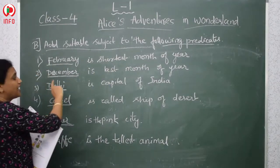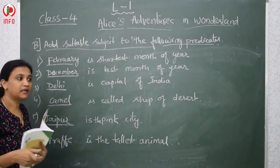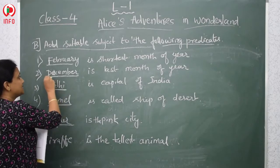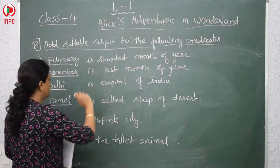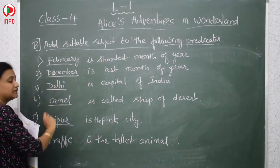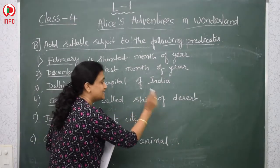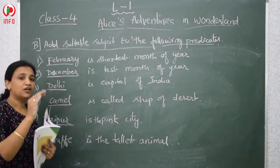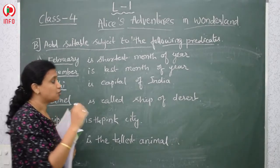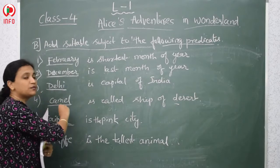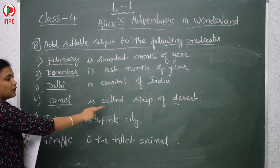The second one is: dash is the last month of the year. January, February... which one comes last? December. So December is the last month of the year. Then: dash is the capital of India — Delhi is the capital of India. Dash is called the ship of the desert. In the desert you will find only camels, so the camel is the ship of the desert.